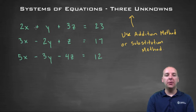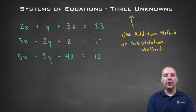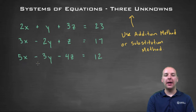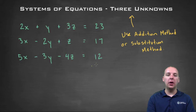So here we've got a system: 2x plus y plus 3z equals 23; 3x minus 2y plus z equals 17; and 5x minus 3y minus 4z equals 12.